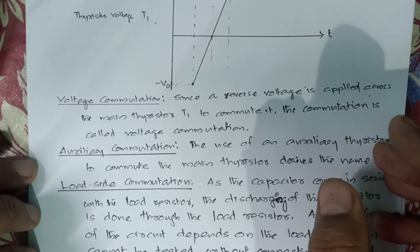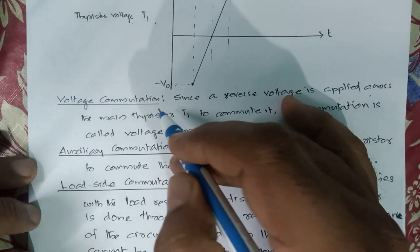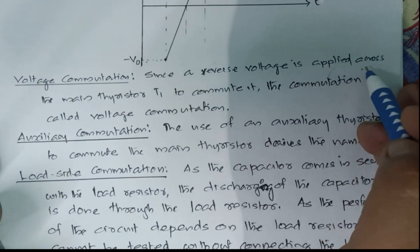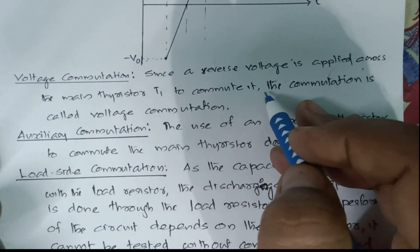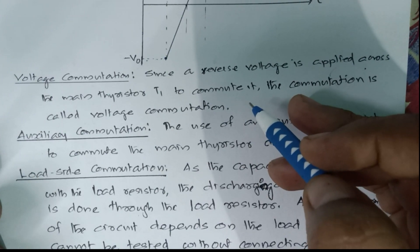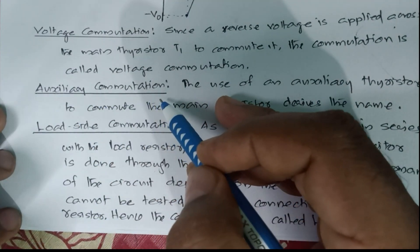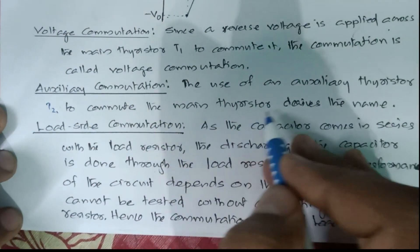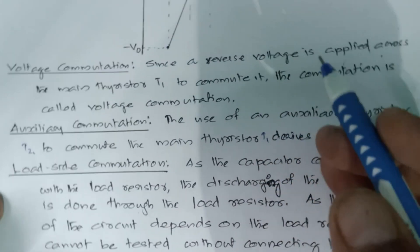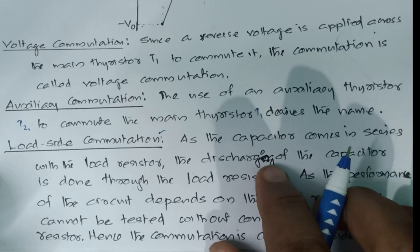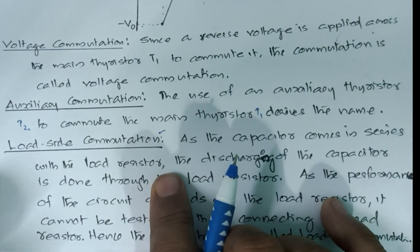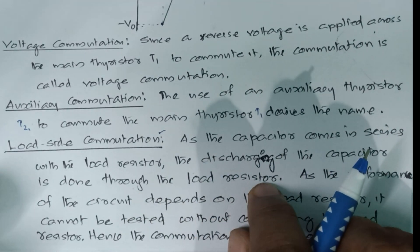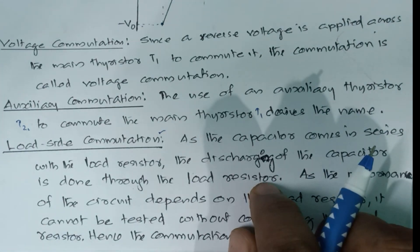This commutation has several alternative names. It is called voltage commutation because a reverse voltage is applied across the main thyristor T1 to commute it. It is also called auxiliary commutation because an auxiliary thyristor T2 is used to commute the main thyristor T1. This method is an example of load side commutation because the capacitor comes in series with the load resistor — the capacitor discharges through the load resistor and supplies the necessary load current when T1 is commuted.